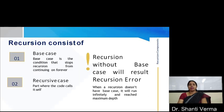Now, let's discuss what recursion consists of. Basically, recursion consists of two cases. One is called the base case and second is called recursive case. Base case is the condition that stops recursion from continuing on forever, means the condition from which the recursion ends.